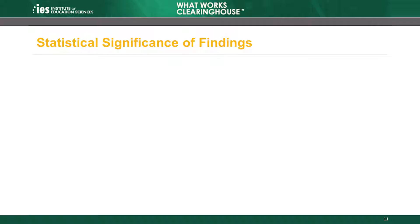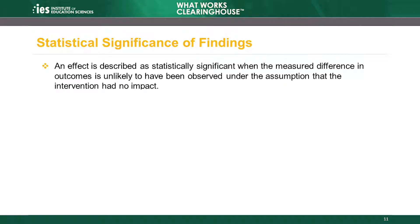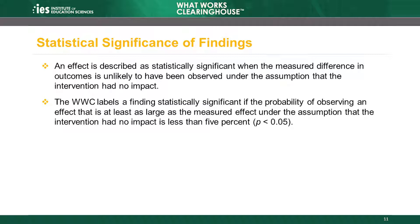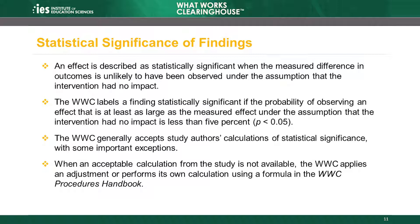In addition to the three measures of magnitude, the WWC also reports the statistical significance of findings. An effect is described as statistically significant when the measured difference in outcomes is unlikely to have been observed under the assumption that the intervention had no impact. The WWC follows a standard convention that labels a finding statistically significant if the probability of observing an effect at least as large as the measured effect — under the assumption of no impact — is less than 1 in 20, or 5 percent. The WWC generally accepts study authors' calculations of statistical significance, with some important exceptions explained later in this module. When an acceptable calculation from the study is not available, the WWC applies an adjustment or performs its own calculation using a formula in the WWC Procedures Handbook.